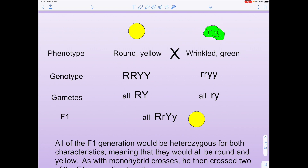We have our round yellow phenotype and our wrinkled green phenotype. Because round was dominant and yellow was dominant, they're given uppercase letters R and Y. The wrinkled green versions are recessive, shown as lowercase r and y. Therefore all gametes produced by the round yellow seeds will be capital R capital Y, and all gametes from the wrinkled green seed will be lowercase r lowercase y.